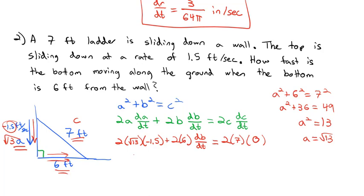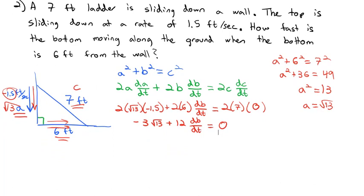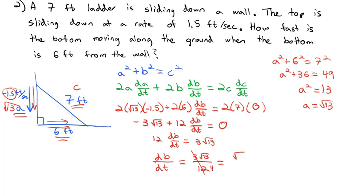Cleaning this up: negative 3√13 plus 12 dB/dt equals 0. Adding 3√13 to both sides: 12 dB/dt equals 3√13. Dividing both sides by 12: dB/dt equals 3√13 over 12. The 3 over 12 reduces, so the ladder is moving √13 over 4 feet per second when the ladder is 6 feet from the wall.